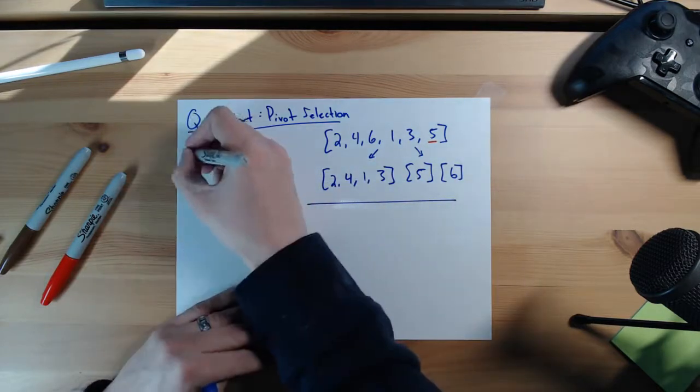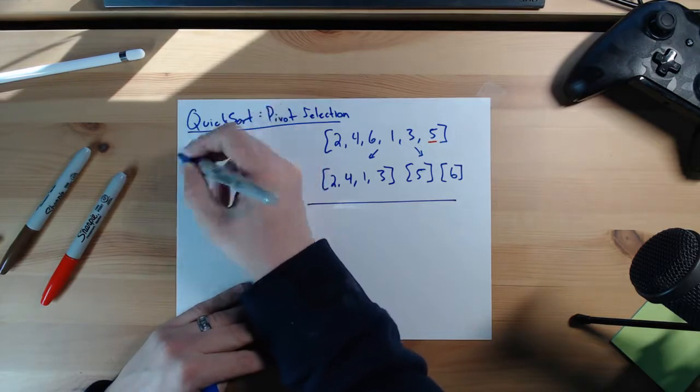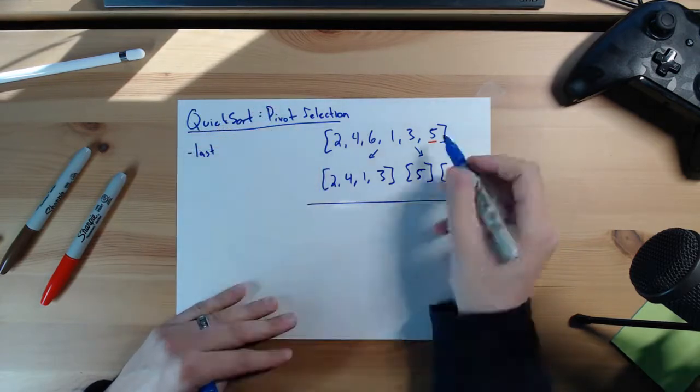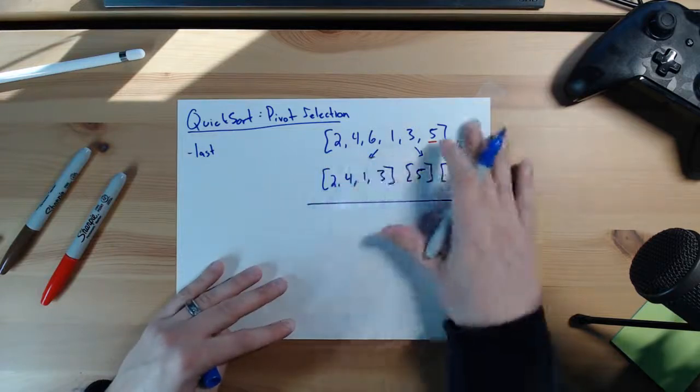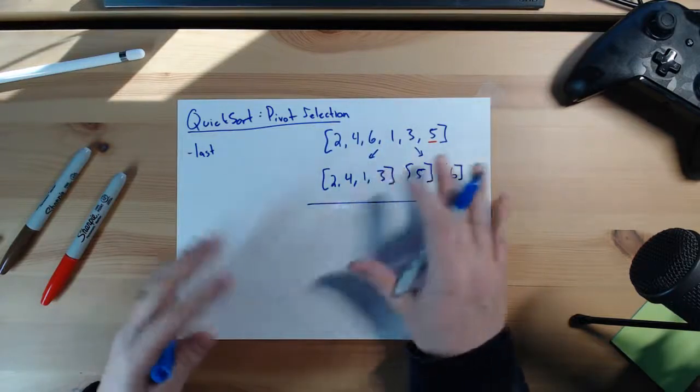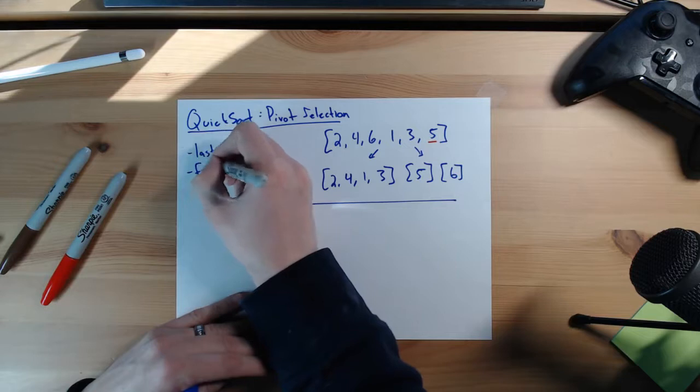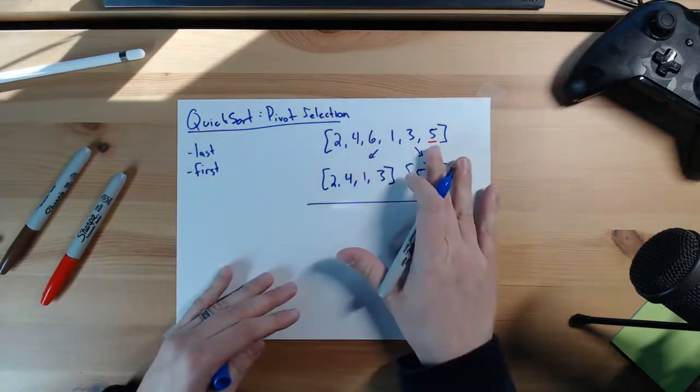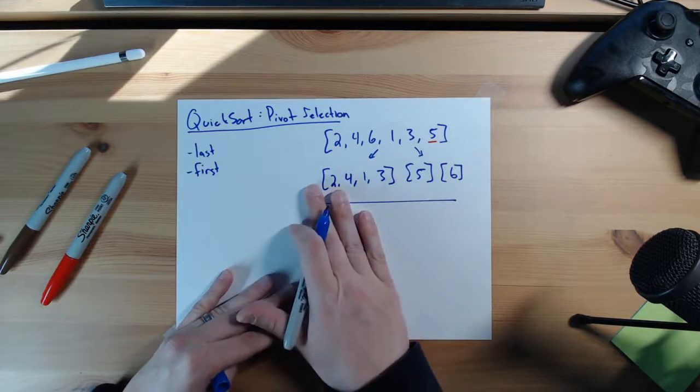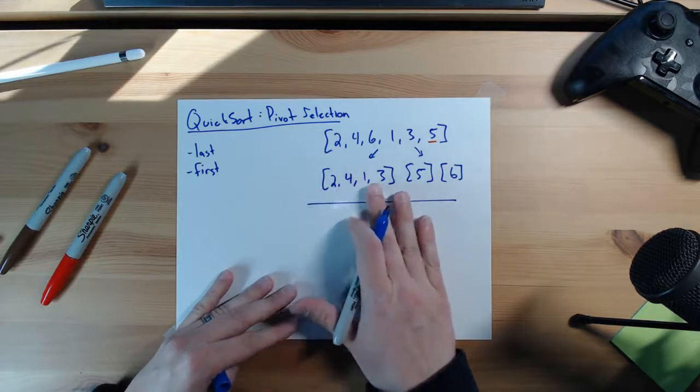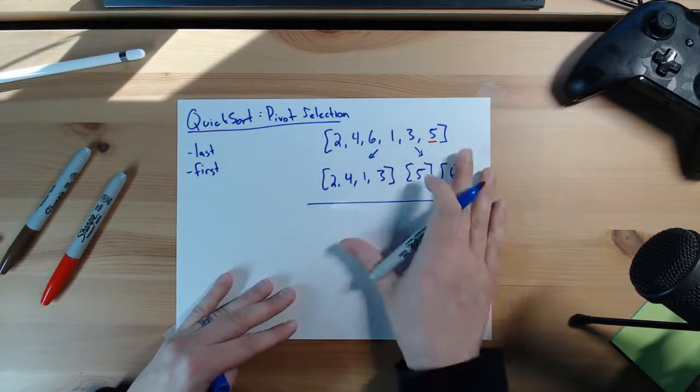What could we pick? We can pick the last element like we have in this example here. This works reasonably well if all the elements are nice and shuffled. We could also pick the very first element, which is very similar to picking the very last one. We could just pick 2 as our pivot point. We get 1 on the left side, 2, and then all the elements that are greater than 2 for our right side array.